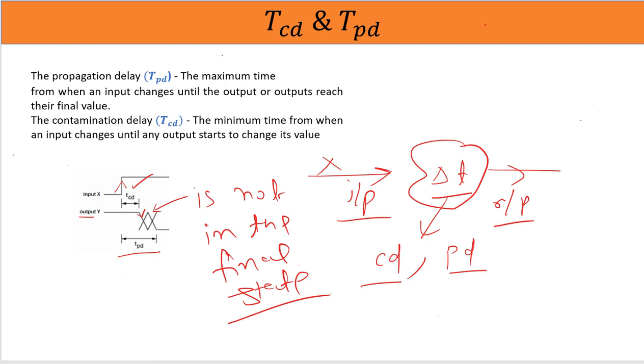So after Tcd, the output may keep on changing till some amount of time and then will reach the final state. The time at which the output goes to the final state, or maybe I will say in the terms like Tpd is the maximum amount of time by which the output will get to their final value.